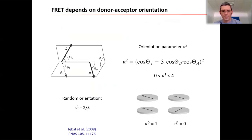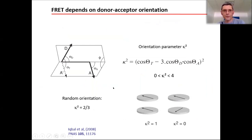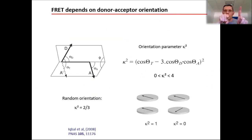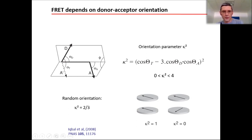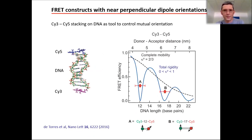FRET also depends on the orientation of the donor and acceptor dipoles — the kappa-squared factor. If the two dipoles are parallel, FRET occurs more efficiently; if perfectly aligned end-to-end, even more so. If they are perpendicular, there is normally zero FRET in homogeneous conditions. If molecules are freely rotating, the kappa-squared factor averages to two-thirds. This factor directly controls FRET efficiency, and it can be monitored experimentally using molecules, though it requires extensive calibration.